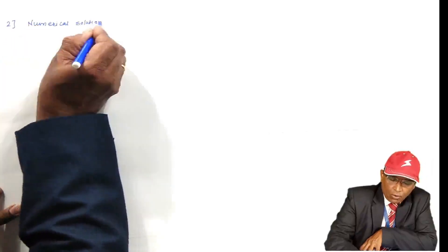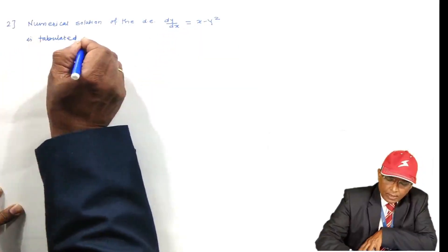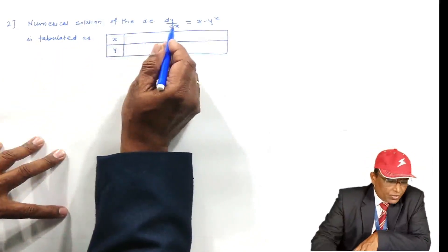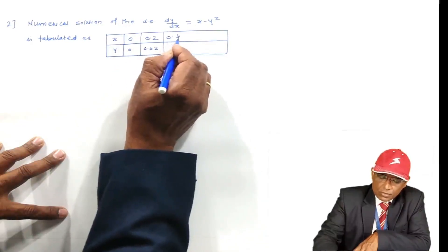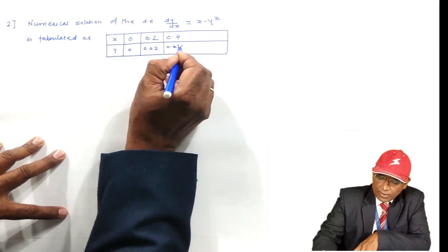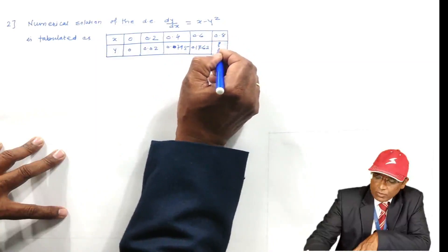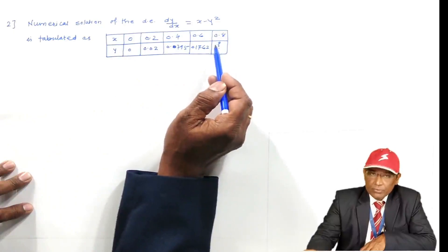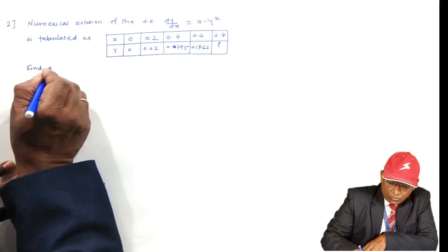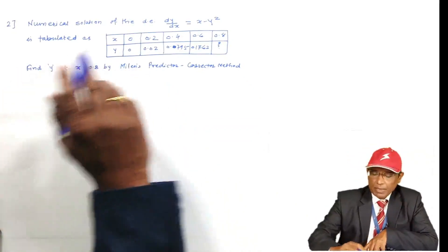One more sum on the Predictor-Corrector formula. Second problem: the numerical solution of the differential equation dy/dx = x − y² is tabulated. The solution at x = 0 is y = 0; at x = 0.2, y = 0.02; at x = 0.4, y = 0.0795; at x = 0.6, y = 0.1762. The value at x = 0.8 is required. Find y at x = 0.8 by Milne's Predictor-Corrector method.